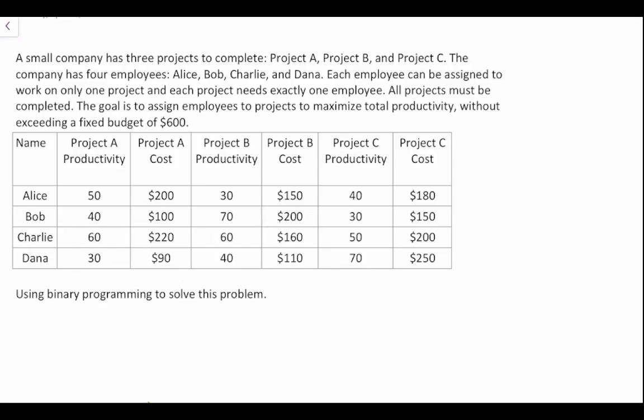The goal is to assign employees to projects to maximize total productivity without exceeding a fixed budget of $600. In this table, we'll look at project A for example. We have our employees Alice, Bob, Charlie, and Dana, and then we have their level of productivity on project A as well as the cost associated with assigning them to project A. In theory, these employees have different skill sets and it costs different amounts of money to have them do different types of projects, and they'll have different levels of productivity depending on that project.